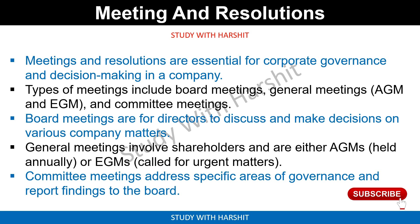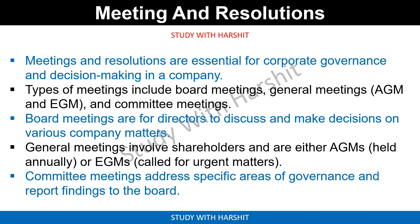General meetings involve shareholders and can be either AGM or EGM. AGM is held annually, while EGM is conducted for urgent matters. Committee meetings address specific areas of governance and report findings to the board.